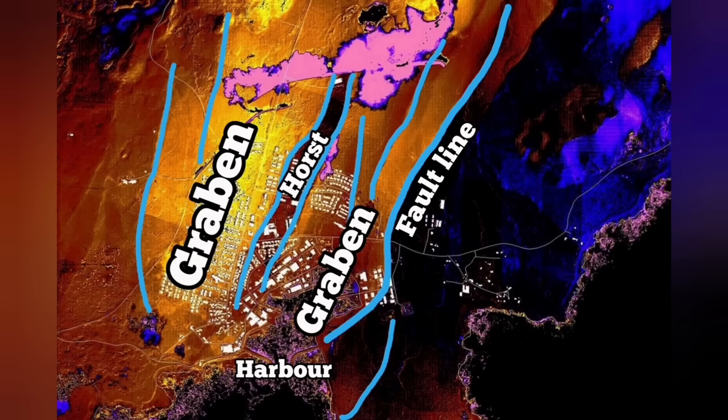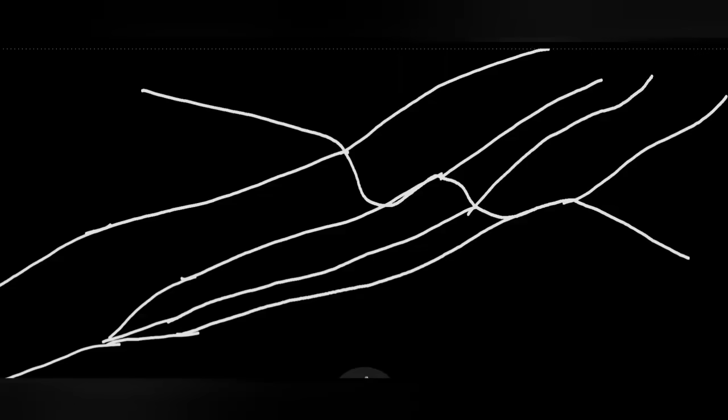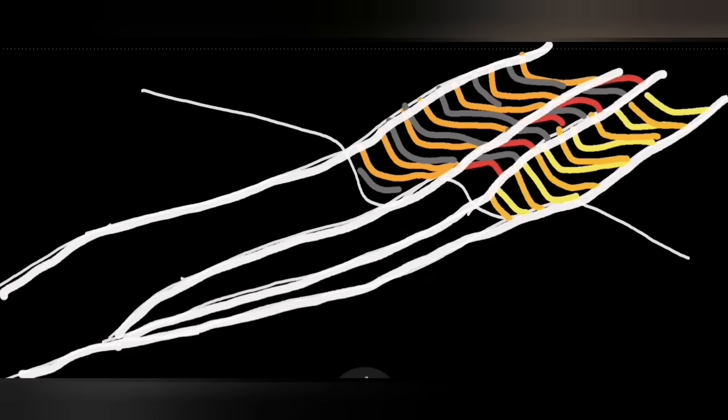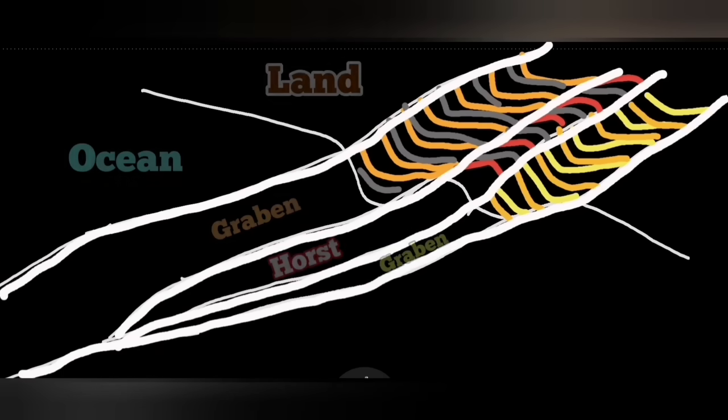This is now going to change, it seems. Off the shore of Grindavik in the harbor and toward the ocean, we have the continuation of this horst and graben. This is practically a rift, a rift valley.